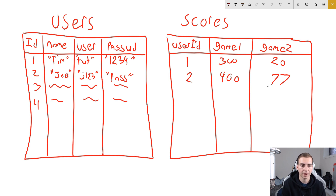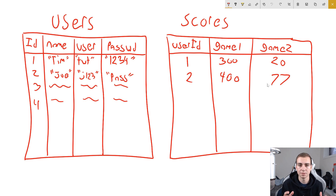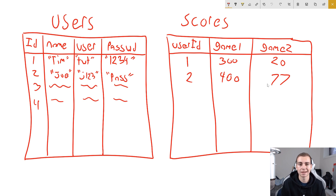We want the user table to store information about the user — so like the name, the username, the password, maybe the date it was created. We don't really want to mix these two tables together and have the users table storing the scores, or the scores table storing information about the user. We need these to be separate entities. So how can we check what user has which scores if these tables aren't connected? Well, we need to connect them, and that's where we use something called a foreign key.